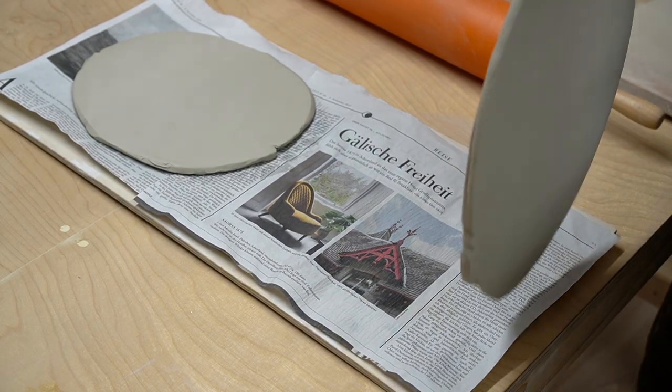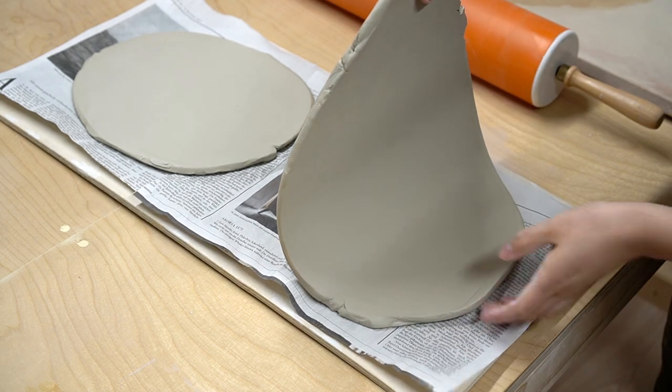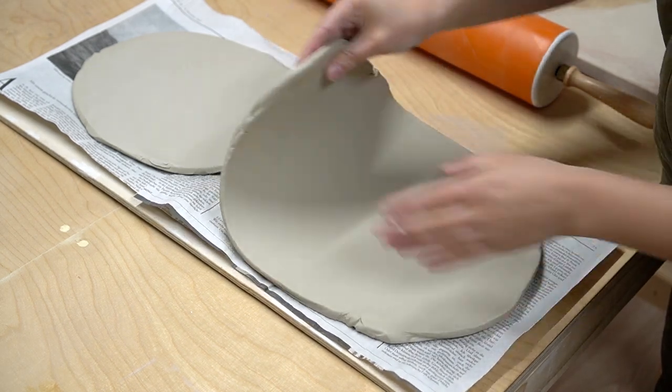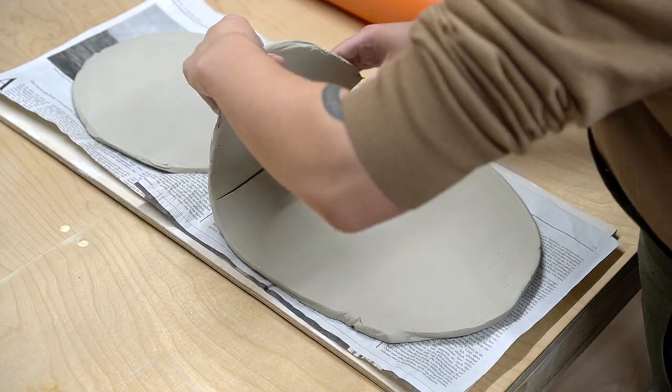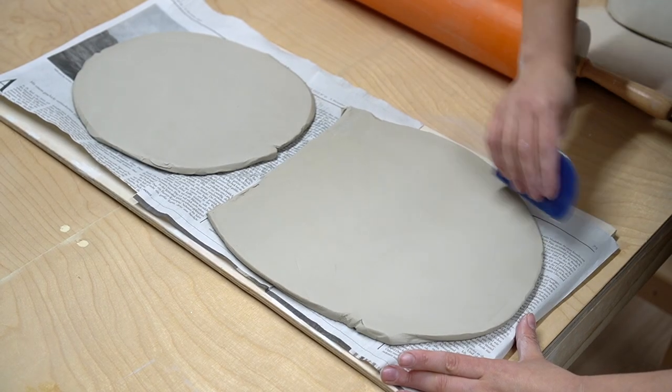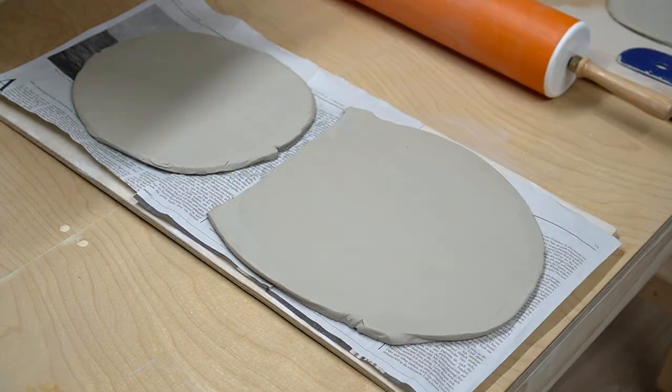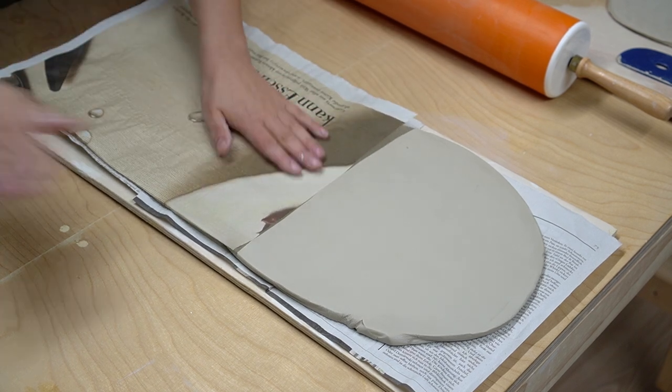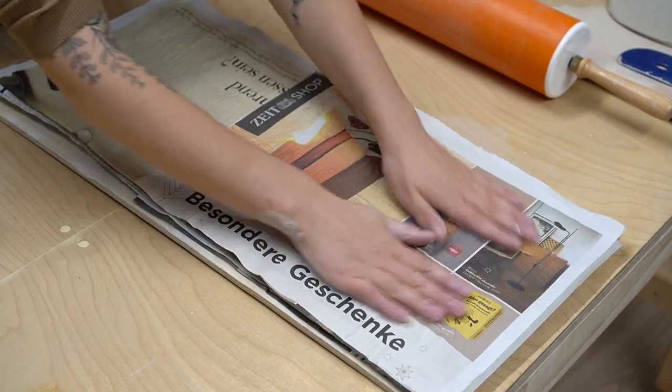Then I transferred the slabs to a board lined with newspaper. For this project I recommend letting your slabs harden a little bit. This will make it easier to cut and assemble them with clean edges and lines. However if you don't have time or you don't mind a little wonkiness you can skip this step.